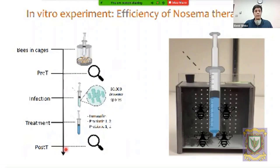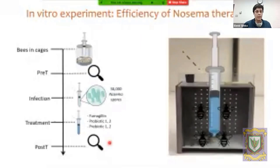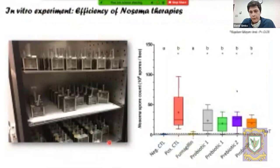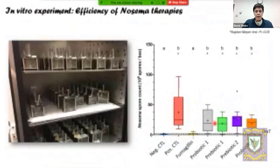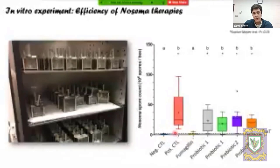At the end we repeated the measurement to know how the treatment worked. In this graph, the dashed line represents the baseline infection rates at the beginning of the experiment, and the boxes represent the final spore counts. The negative control group — neither infected nor treated — showed spore counts basically aligned with the baseline.